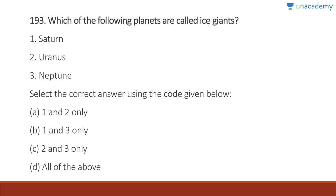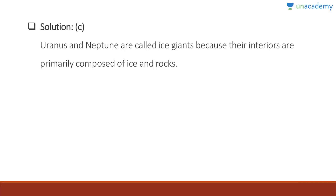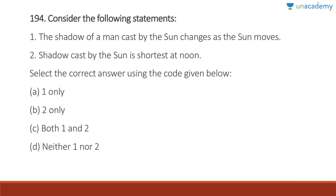Question 193: Which planets are called ice giants? Uranus and Neptune — two and three. They are called ice giants because their interiors are primarily composed of ice and rocks. Saturn is not an ice giant. Answer is C, two and three.